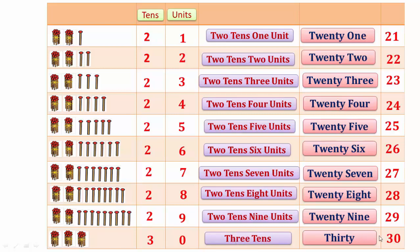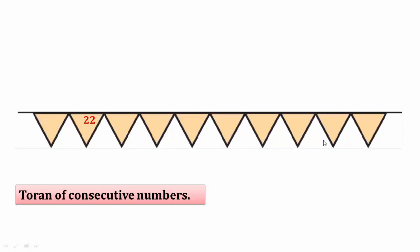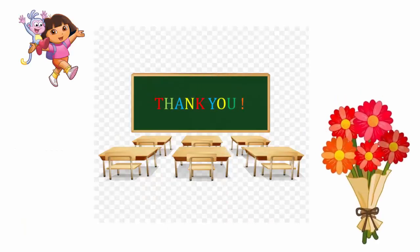Now let's look at consecutive numbers. Here: 22, 25, 28 — write the correct numbers in the blank spaces. Before 22 there is 21, after 22 is 23, 24, 25, 26, 27, 28, after 28 is 29 and 30. Do you understand? Yes, good!